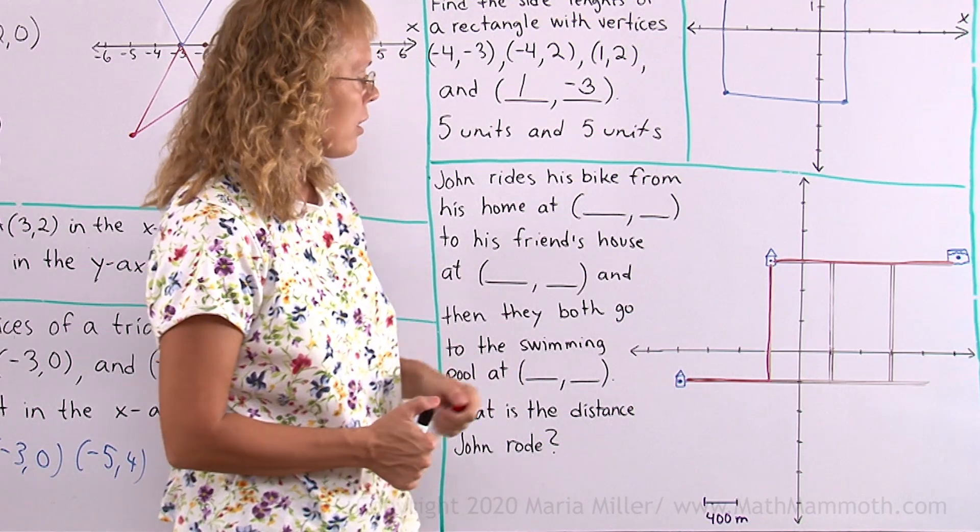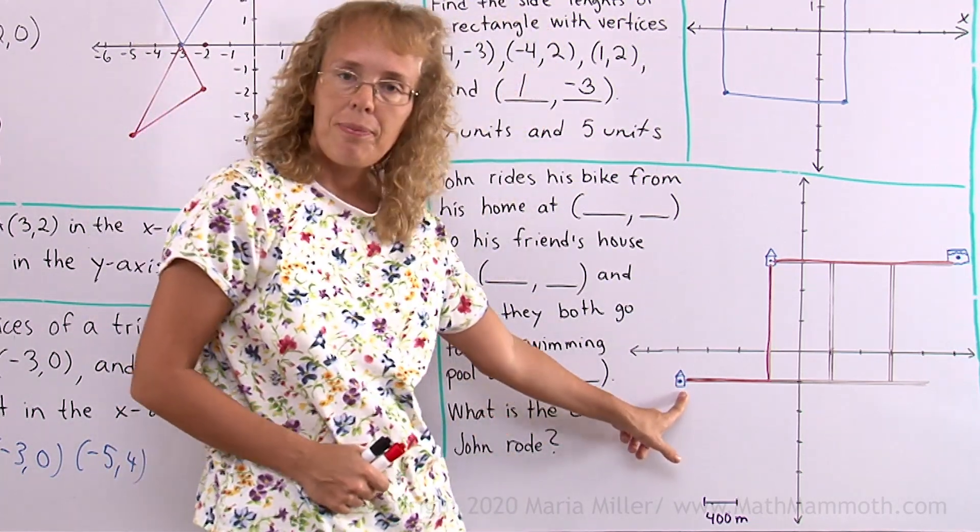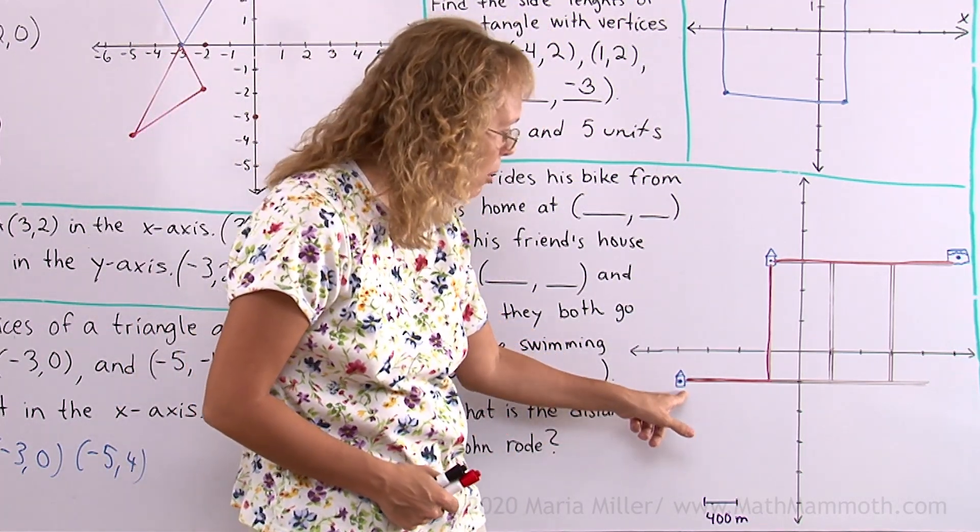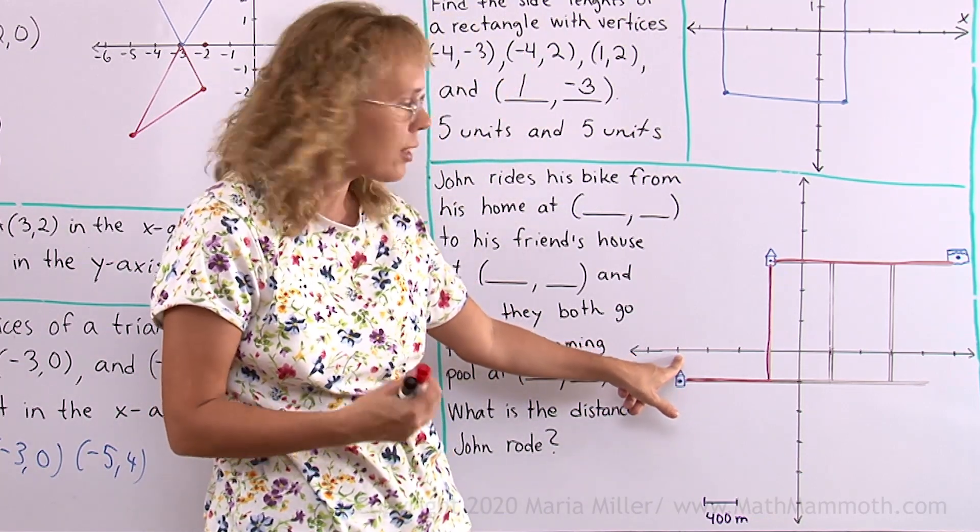And the distance is so that one unit here is 400 meters. Let's first fill in these coordinates. John's home is here. Now from here we will look up to the x-axis. And so what is here? What's the x-coordinate?